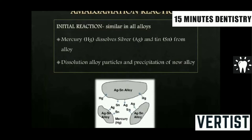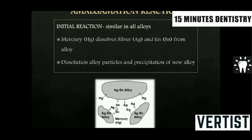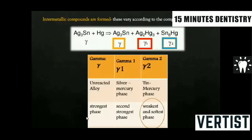Coming to the amalgam reaction — amalgam reaction is very confusing, but I have done my best to explain it clearly. The first thing to remember is that the initial reaction is the same in all alloys, whether low copper, high copper admixed, or unicomposition. Mercury attacks the alloy powder and the silver and tin particles go into the matrix. What happens next is different for each of the three alloys.